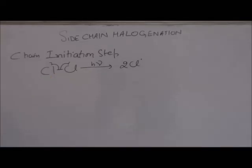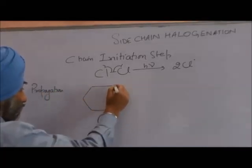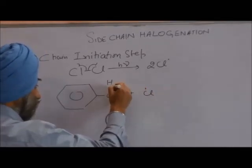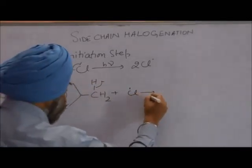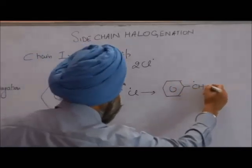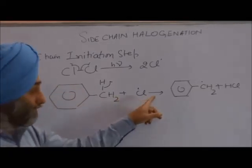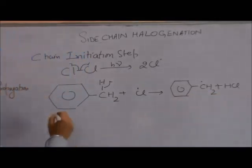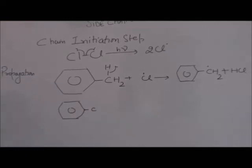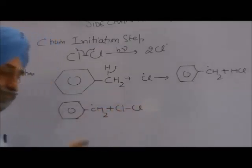Now what does this chlorine free radical do in the chain propagation step? It abstracts a hydrogen from the CH₃ group along with one electron, forming a benzyl free radical plus HCl. So in the chain propagation step, toluene reacts with chlorine free radicals to generate benzyl free radicals and HCl.